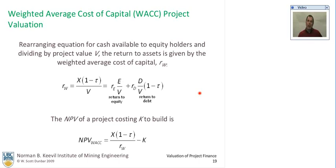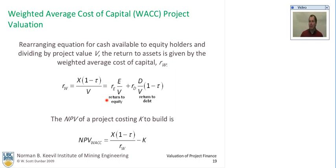The other evaluation technique is the weighted average cost of capital technique. If we rearrange the equation for the cash available to the equity holders and divide by the project value, the return to assets is given by the weighted average cost of capital. The first part is the return to equity and the second part is the after-tax return to debt. So the net present value of a project costing K to build is X times (1 minus tau) divided by Rw, minus the total capital costs.